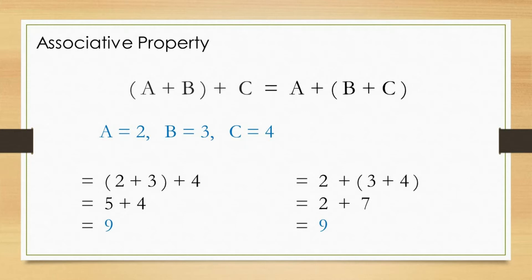Then, 2 plus 7 is equal to 9. The right side of expression resulted in the same result as the left side, which is 9.